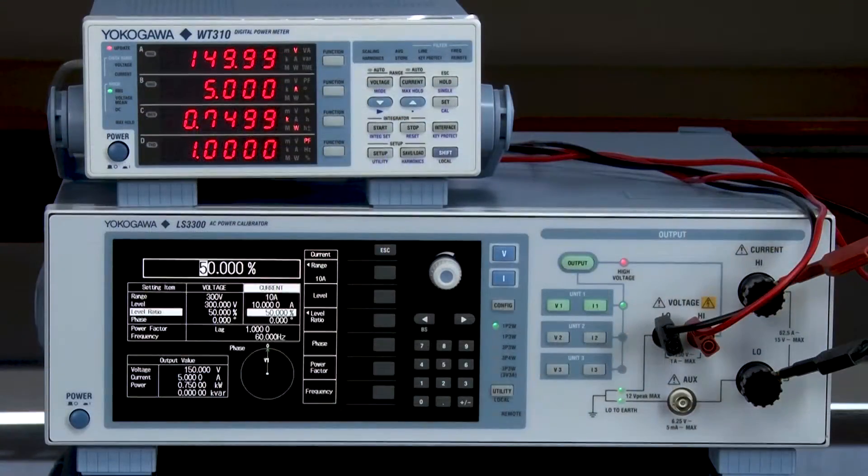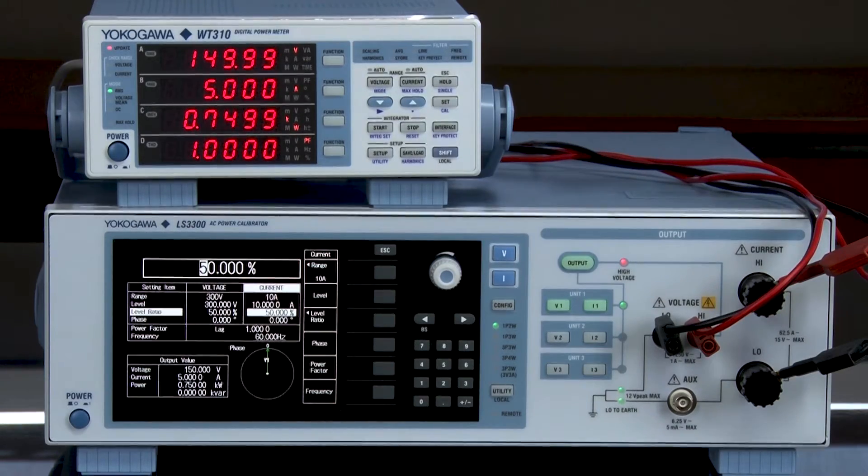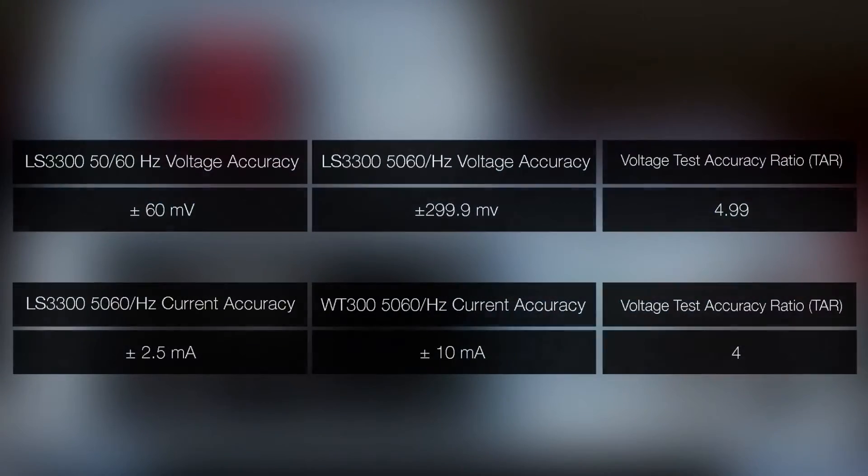The results are seen here on the WT310 power analyzer. From these results the accuracies for both the LS3300 and the WT300 were calculated. For the LS3300 at 60 Hertz, the voltage accuracy at this range and setting is plus minus 60 millivolts with the WT300 accuracy being plus minus 299.9 millivolts. This provides a TAR or test accuracy ratio for voltage equaling 4.99, passing the minimum required ratio.